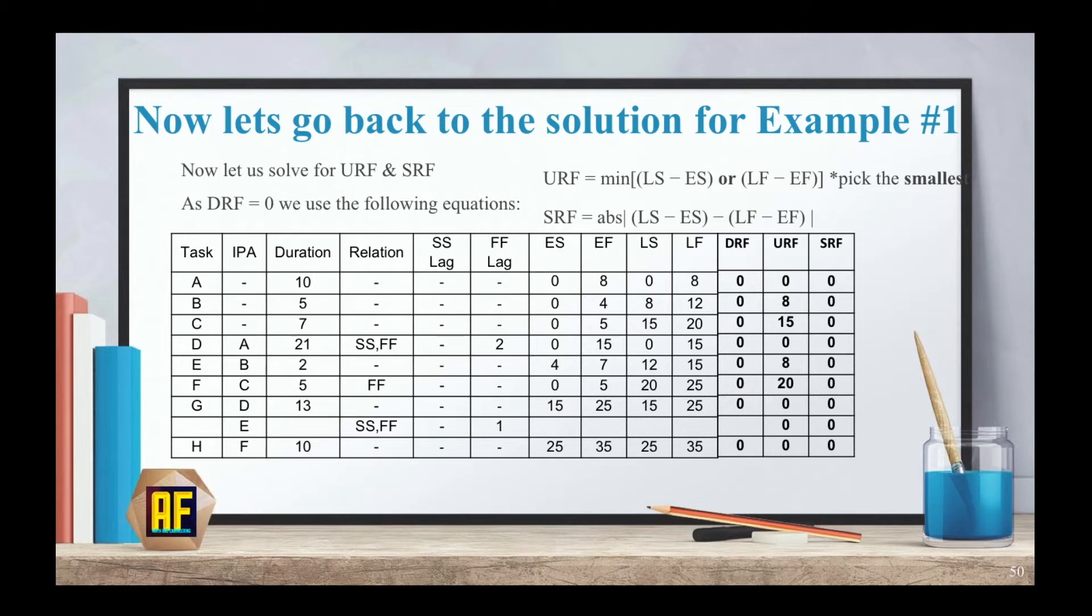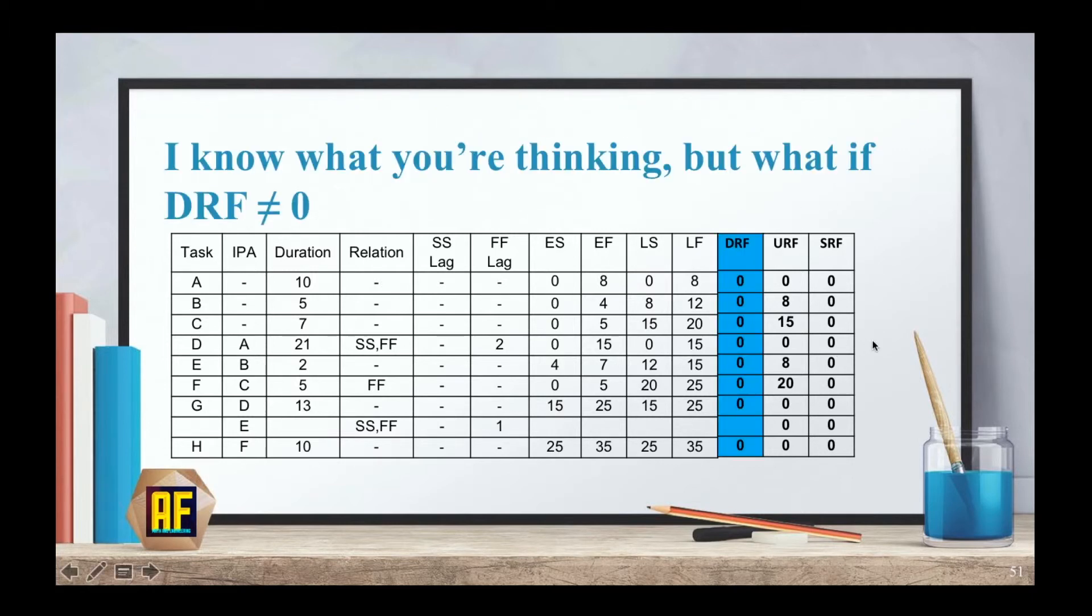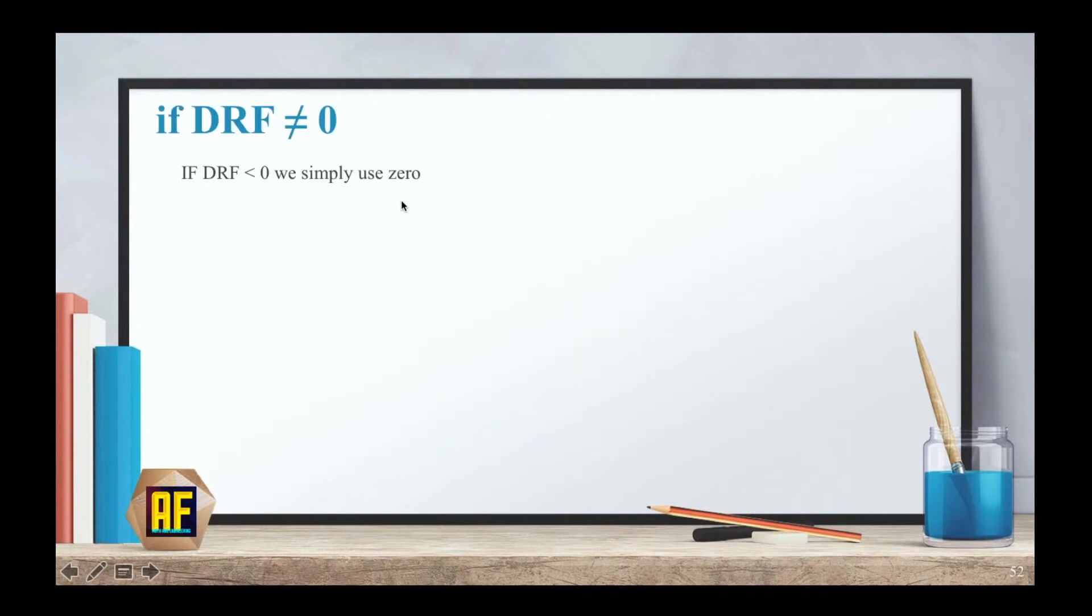And we got our table filled. Now, I know what you think. But what happens if DRF doesn't equal zero? Then what do we do? Well, if DRF doesn't equal zero, if it's smaller than zero, we still use zero. So it's the same.